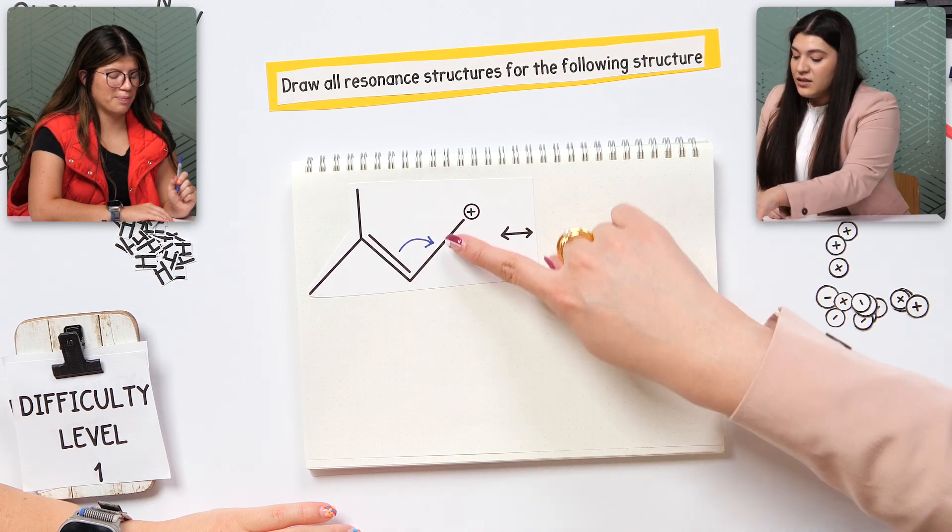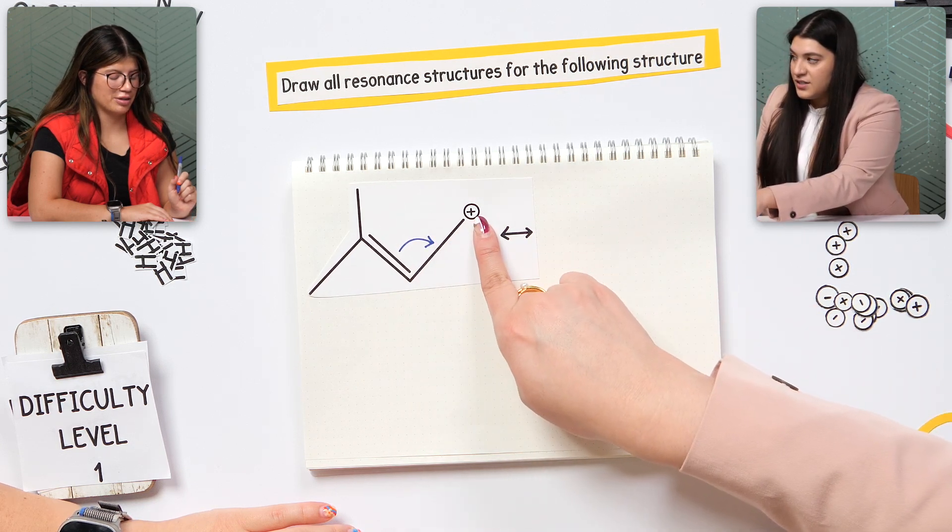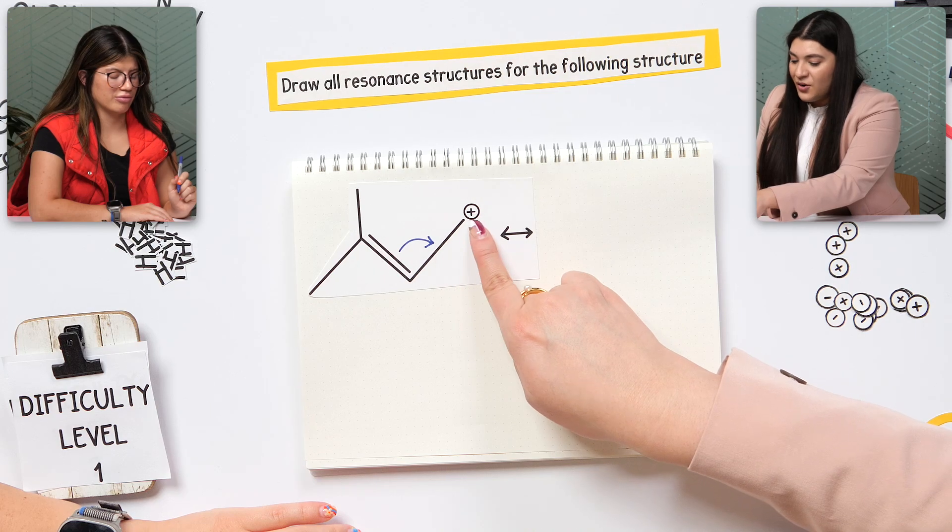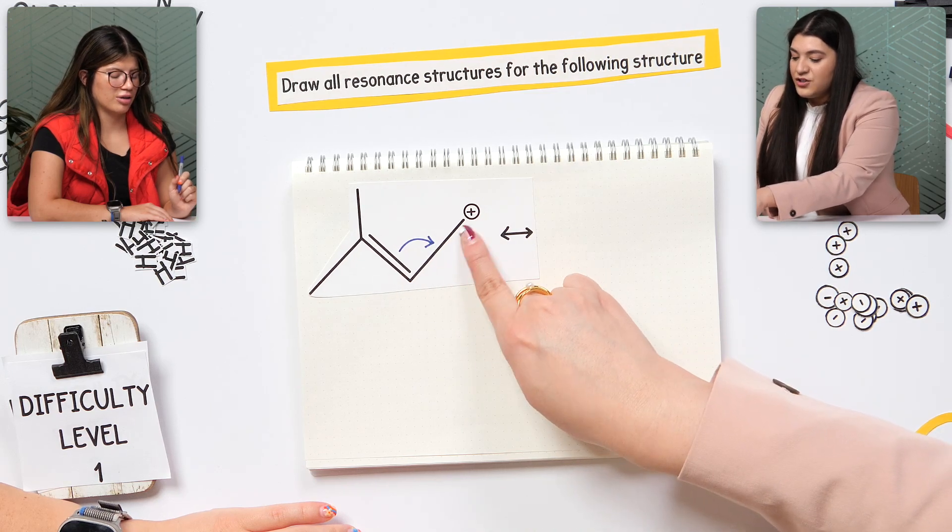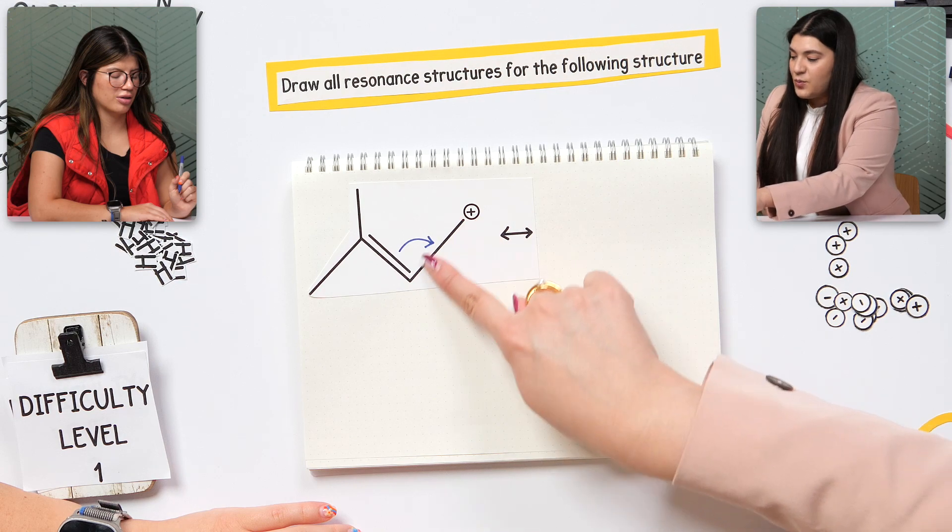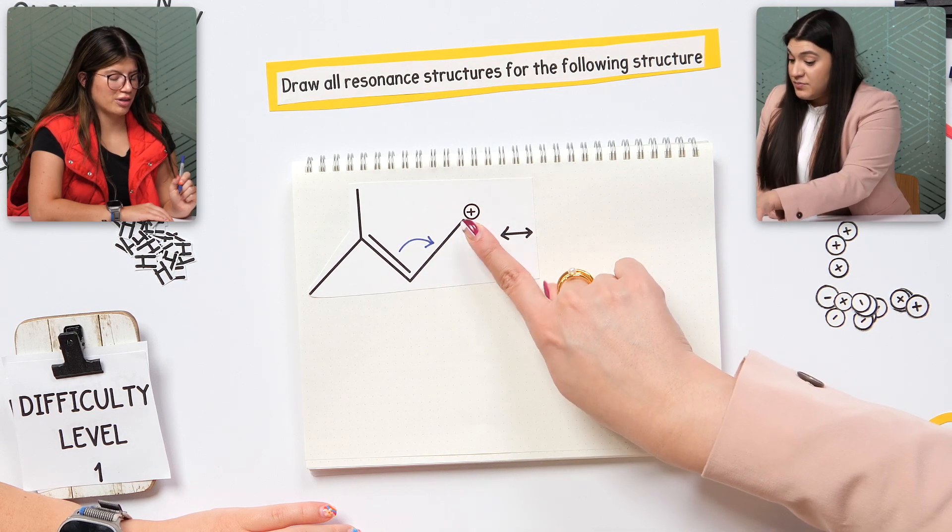A lot of times students want to point this to the positive charge, but it's not going there necessarily. We want to point this to then show that there's going to now be a double bond at this end. So that's correct.